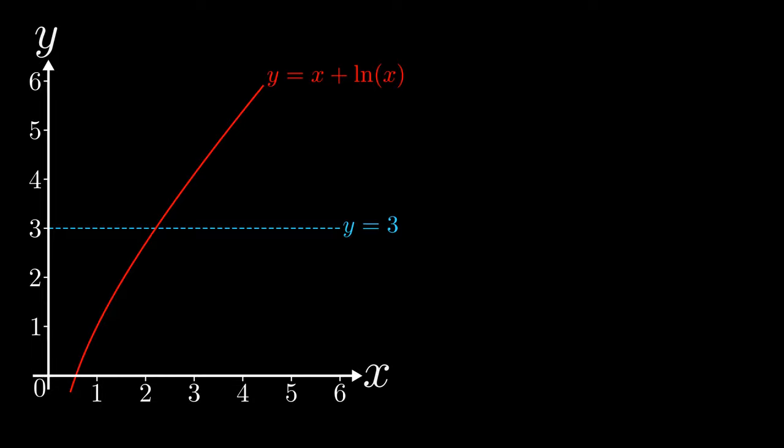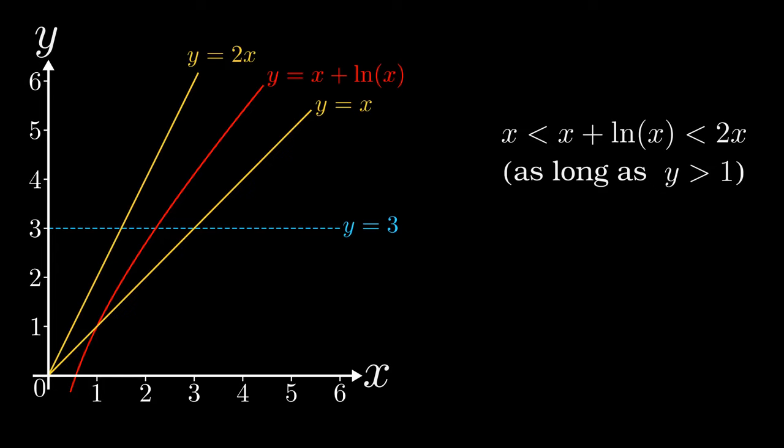Now, let's consider the fact that when x is greater than 1, the natural logarithm of x becomes positive. On the other hand, log of x grows slower than x itself. This means that x is less than x plus the natural log of x, which is in turn less than 2x. On the graph, this means that the lines y equals x and y equals 2x bound our function from above and below. These lines in turn cross the line y equals 3 on either side of the solution we are seeking, giving us a nice interval in which to look.